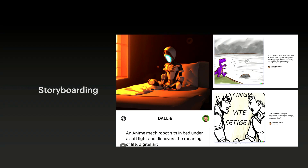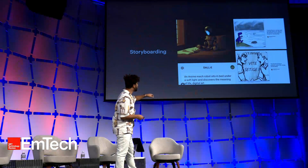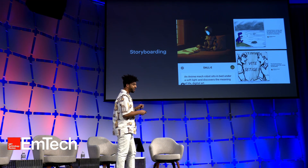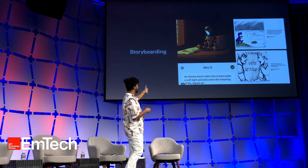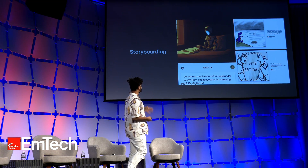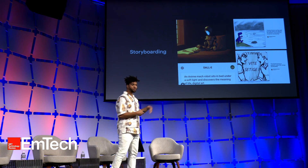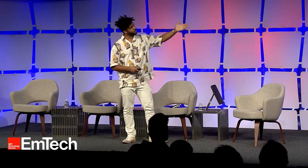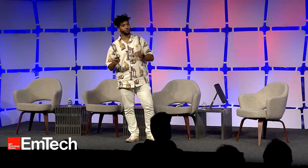I've been using it for storyboarding. These are all so many different layers, but the prompt for that orange one is: 'an anime mech robot sits under a bed of soft light and discovers the meaning of life, digital art.' DALL-E helped get a frame of reference that I could totally use to explain a story and build a whole narrative. You can do anime with it, you can do rough layout — it is just so helpful.